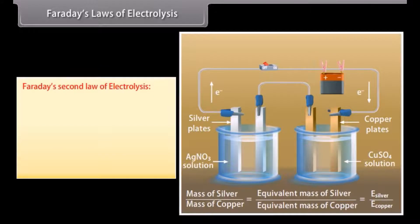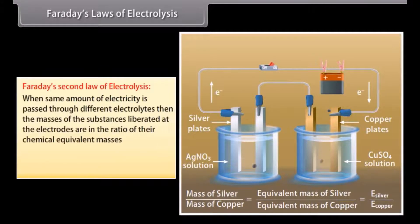Z is defined as the amount of the substance deposited or dissolved by passing one coulomb of electricity through the electrolyte melt or solution. Faraday's second law of electrolysis. When same amount of electricity is passed through different electrolytes, then the masses of the substance liberated at the electrodes are in the ratio of their chemical equivalent masses.